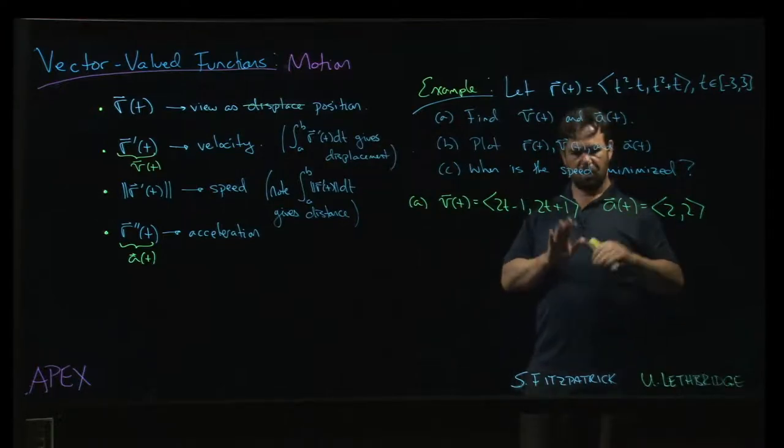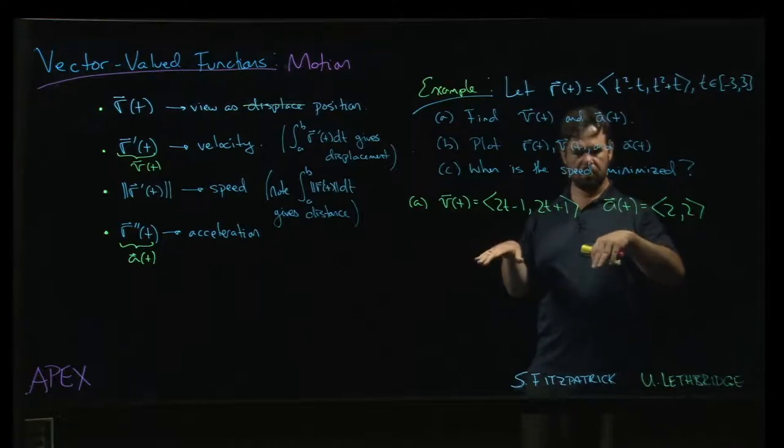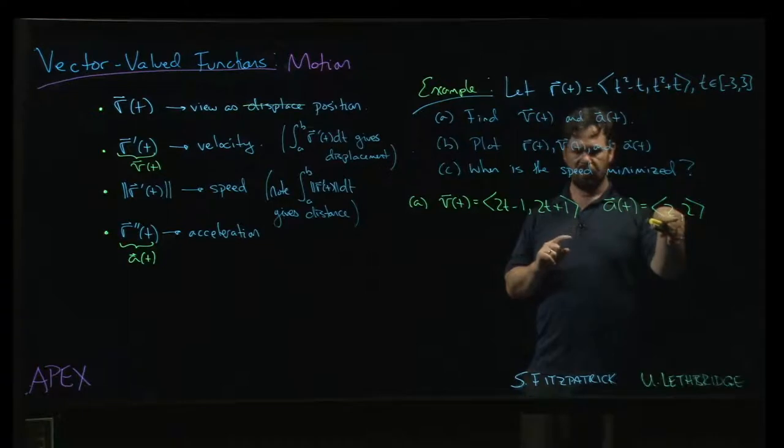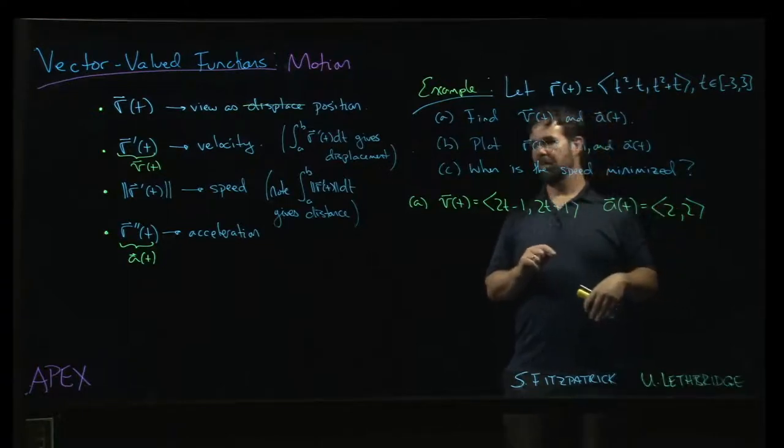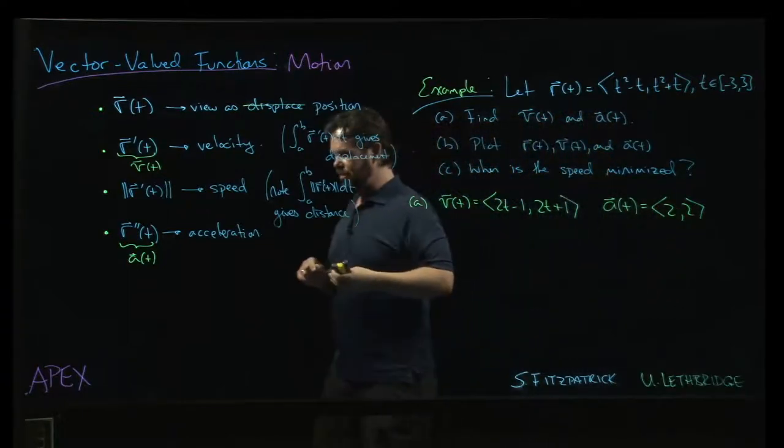And I remember something from calc 1 about, well, acceleration is the derivative of velocity. And if the velocity is a minimum, then the derivative of the acceleration should be zero. And, well, the acceleration is never zero. It's a constant.